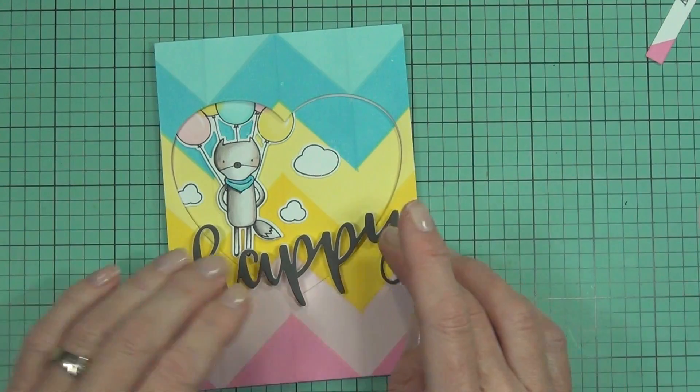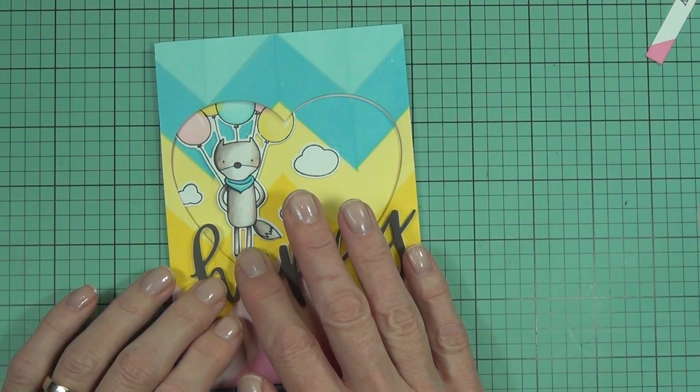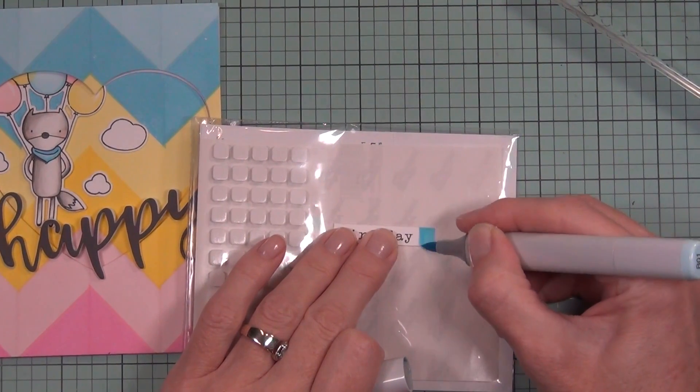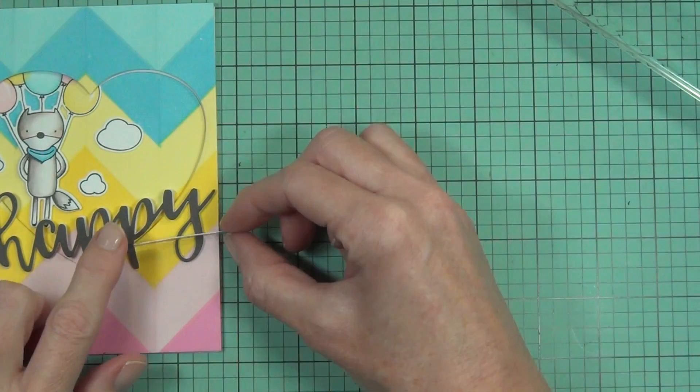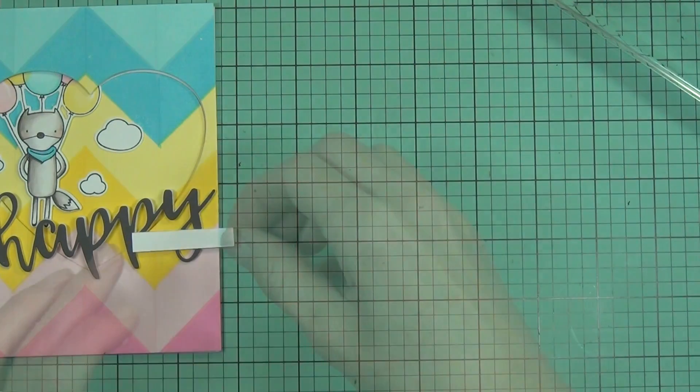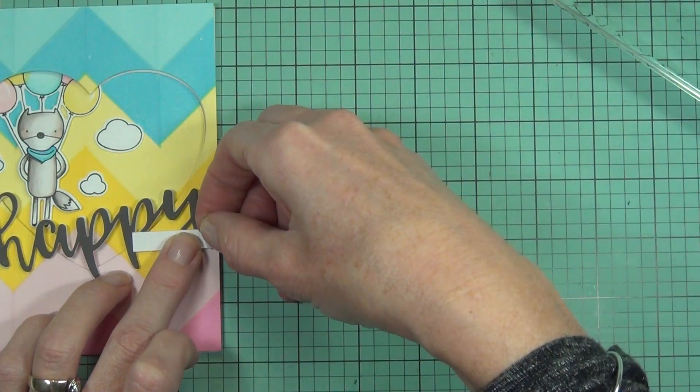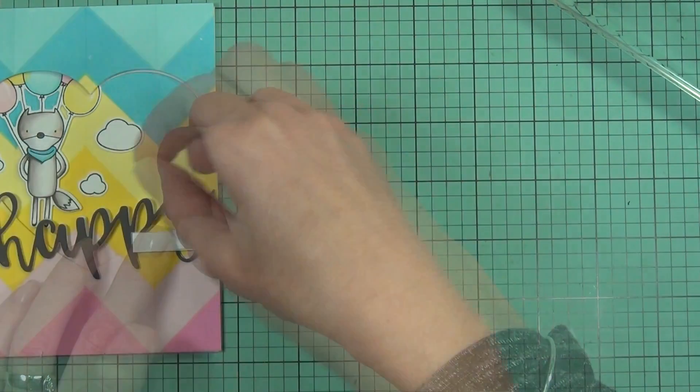For the word birthday, I added some blue alcohol marker—I don't know why, this was something different. When I want to pop up a word like this through a die-cut, I just hold it over top of where it's going to be, and then I know that my little foam squares are going to be exactly the right spot when I lay it back down to adhere it on.